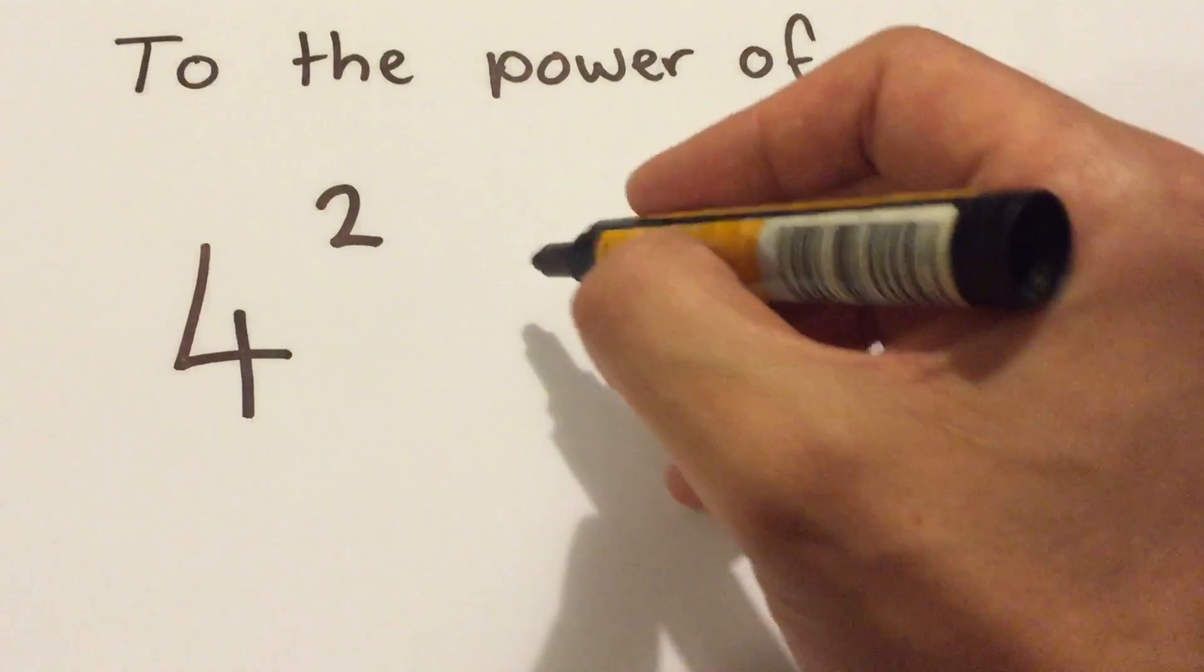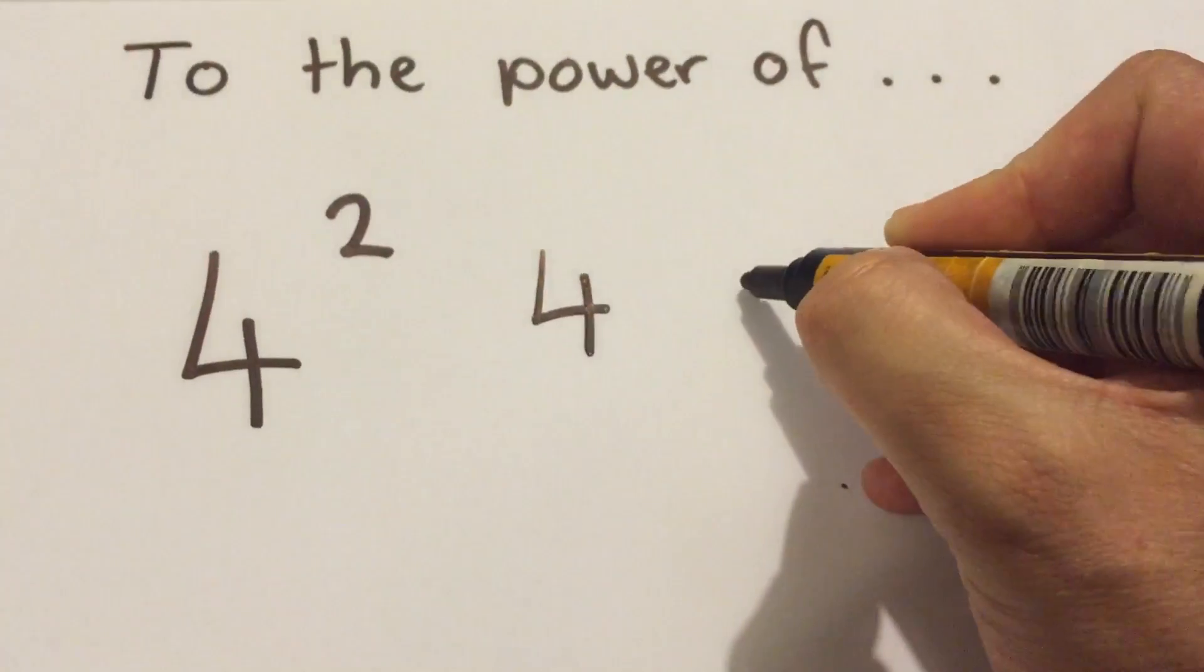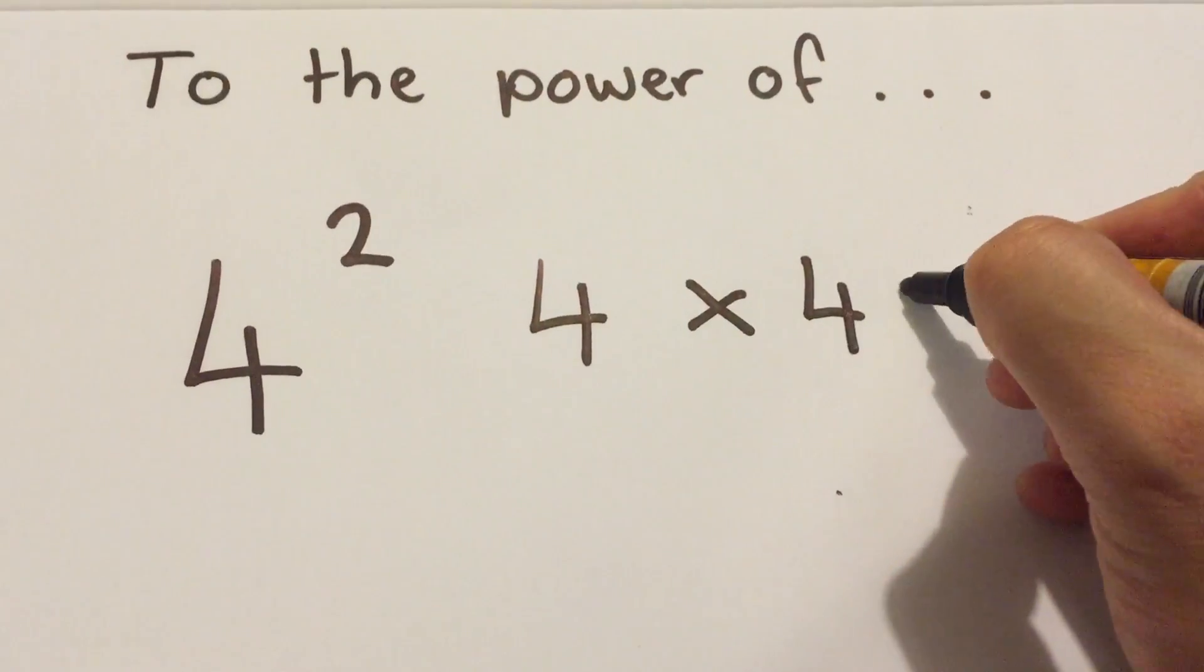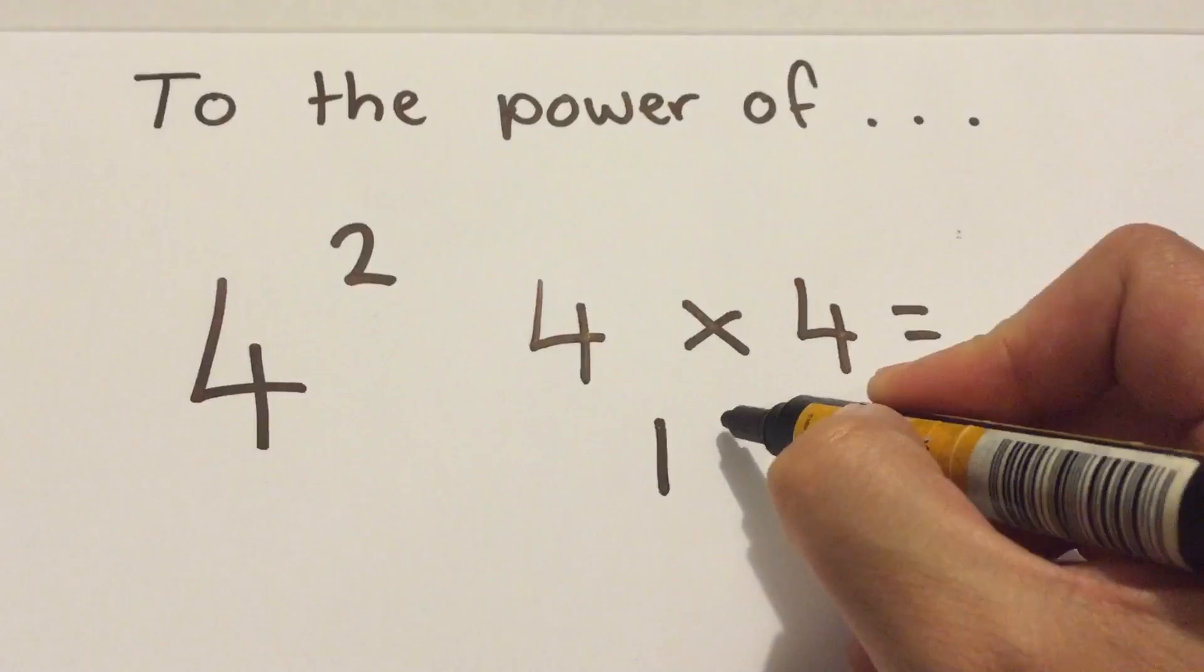4 to the power of 2 just essentially means this: 4 times 4, which is pretty simple. 16.